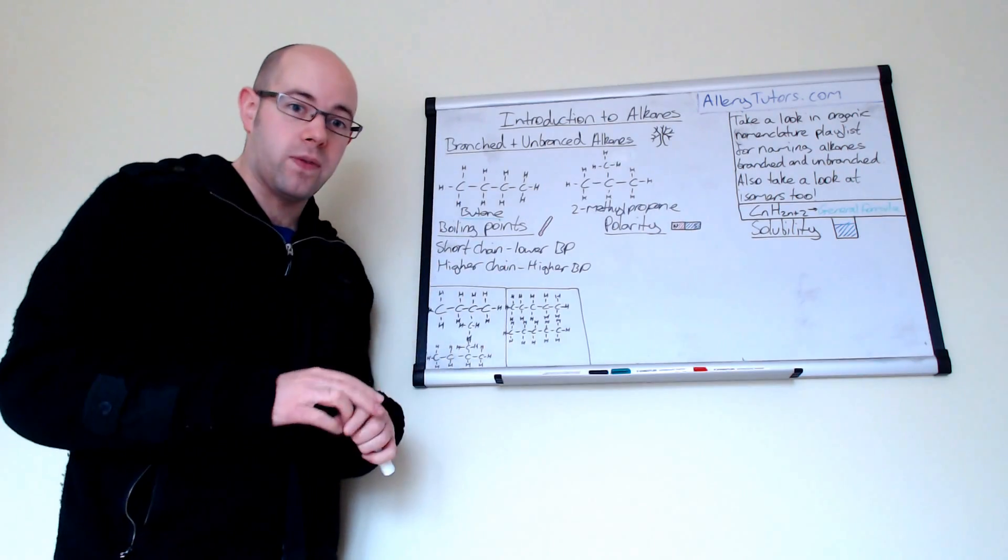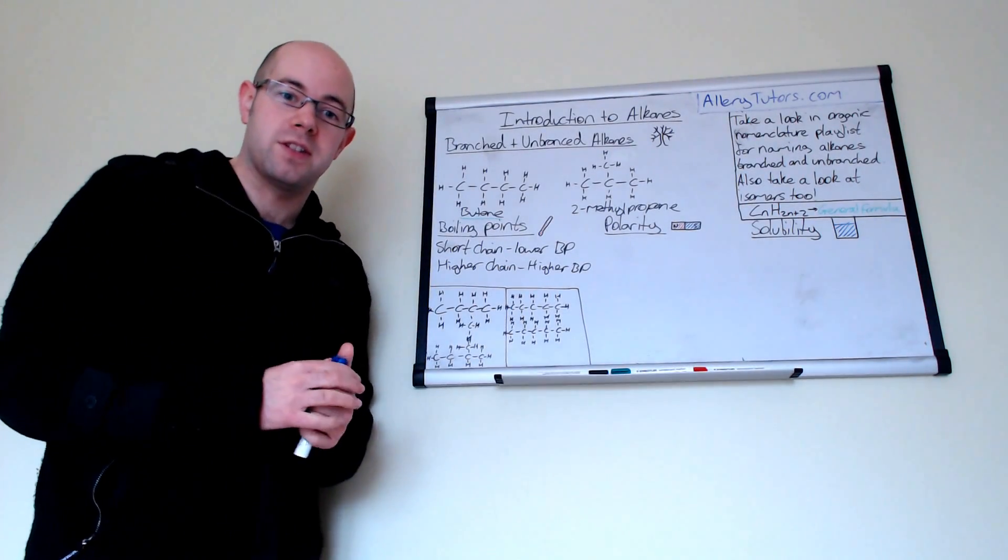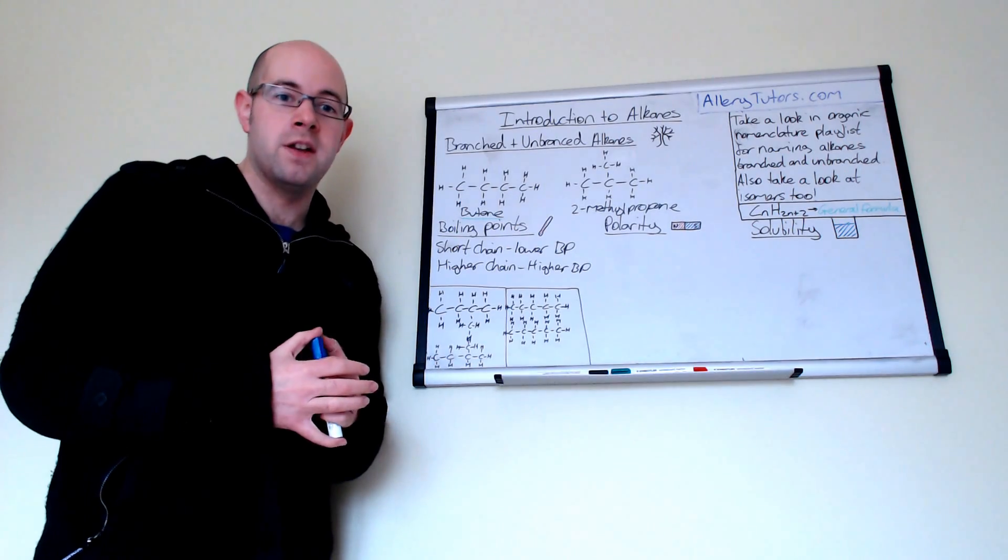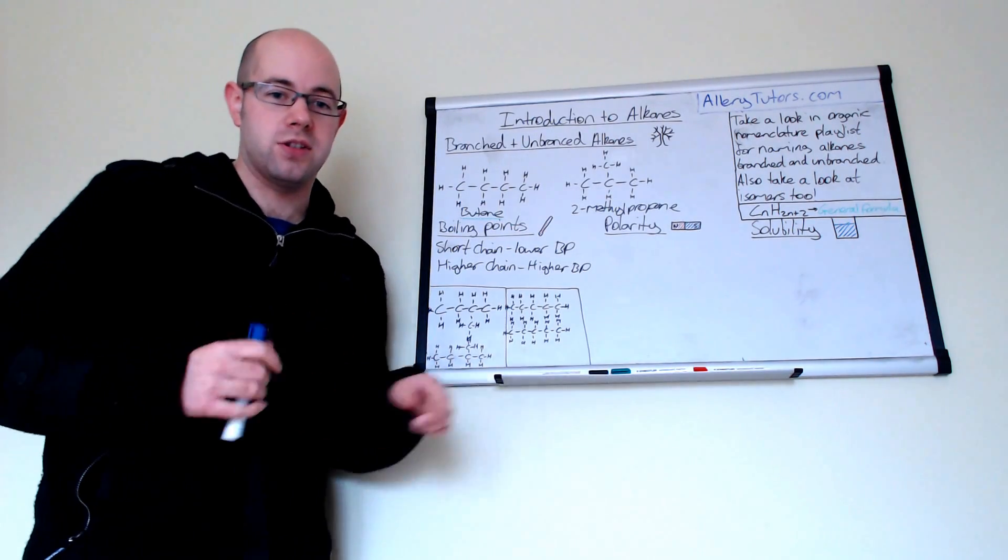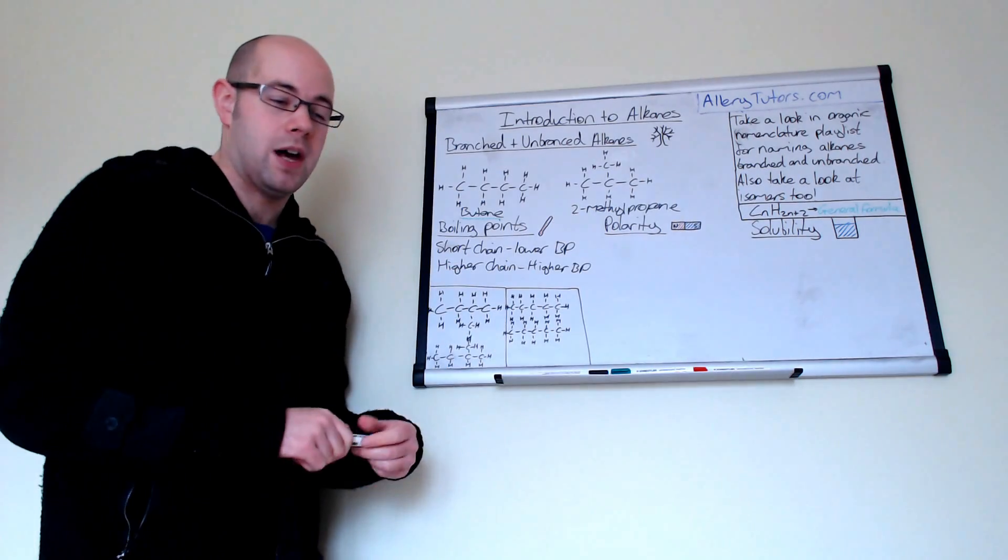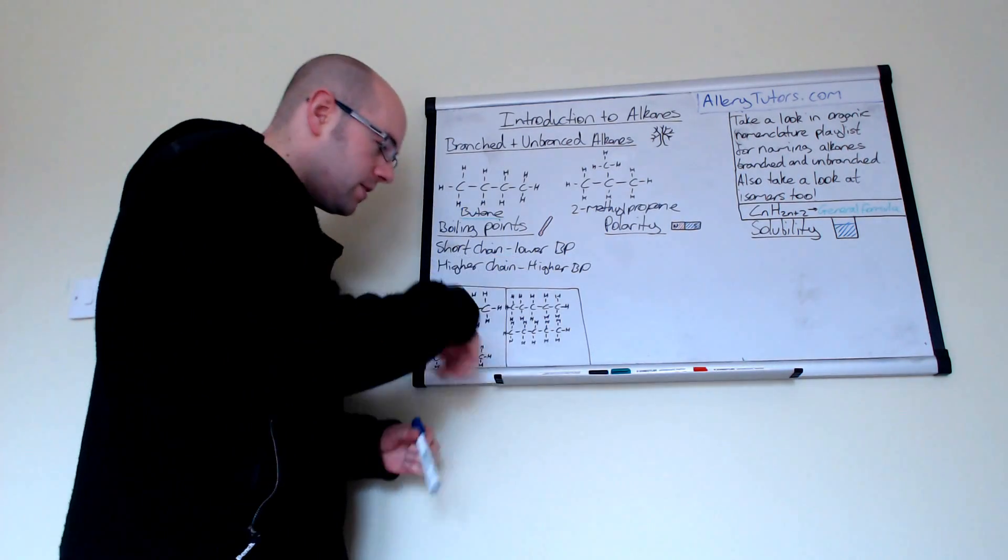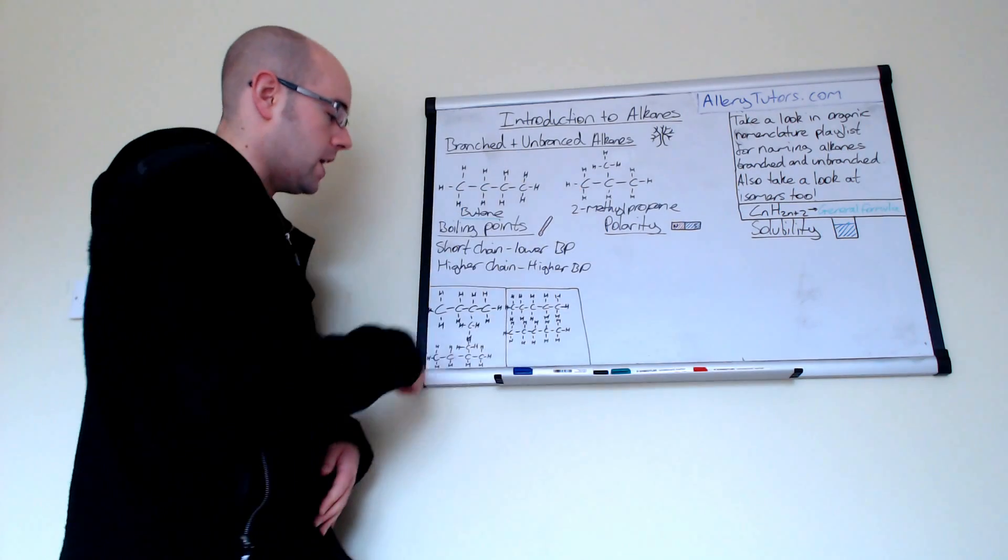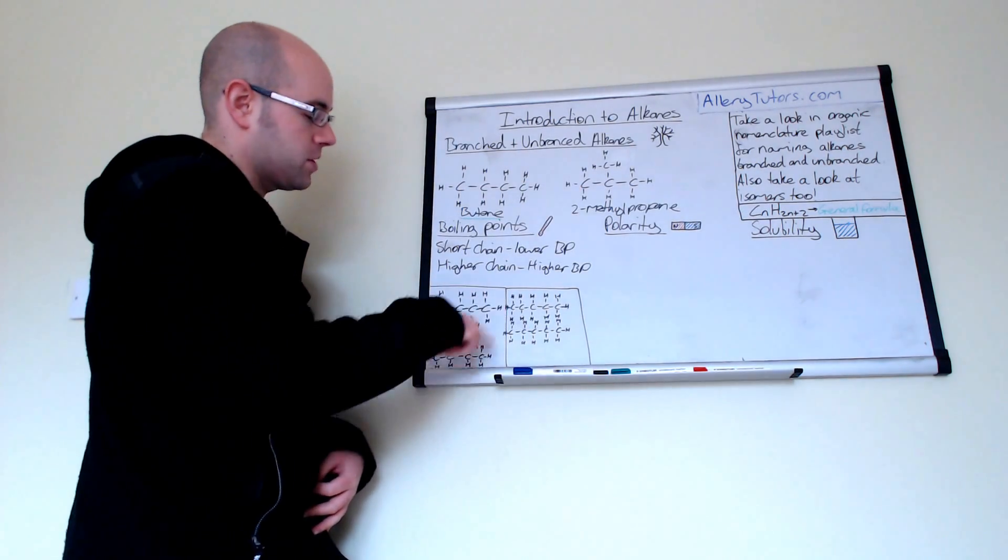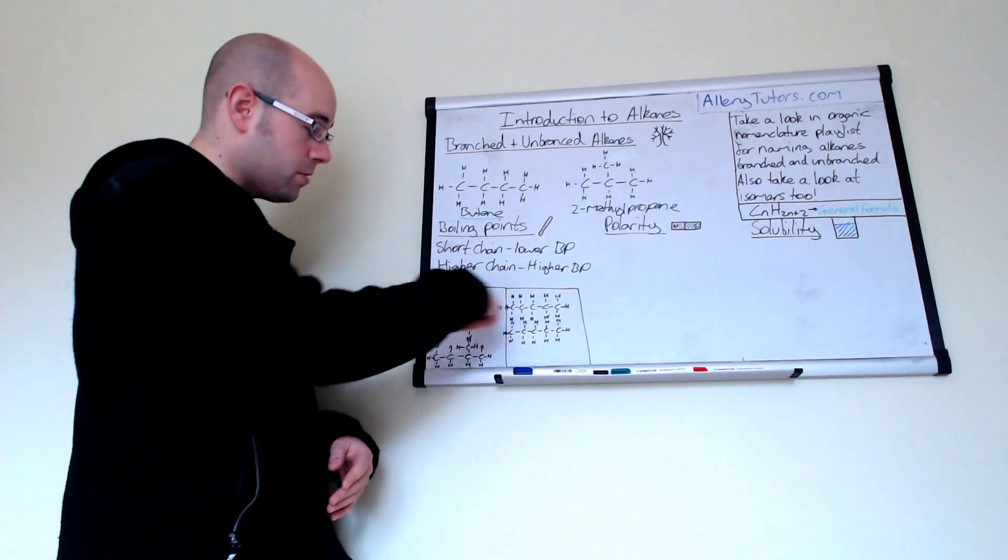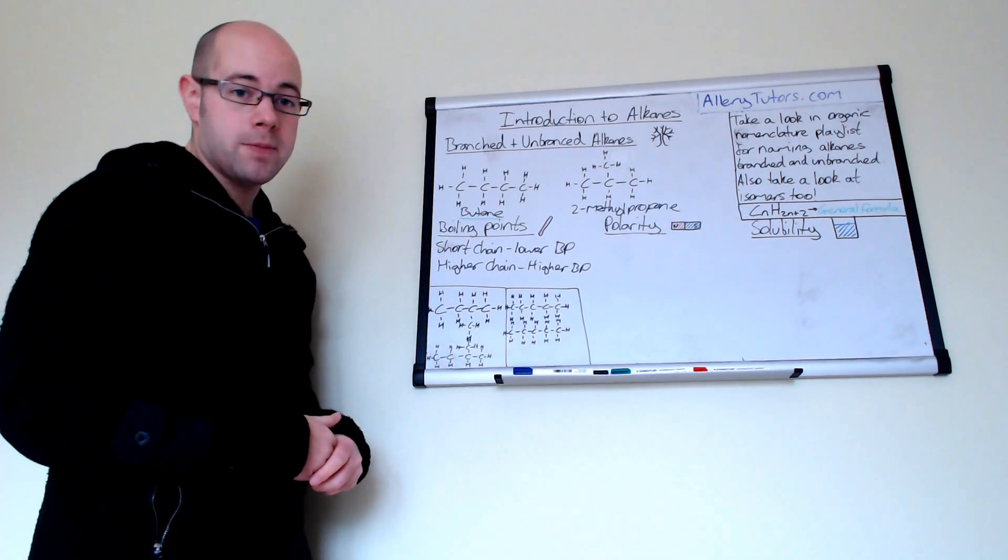Now, this is useful when we come on to fractional distillation, where you extract fractions from crude oil. And there is a video on fractional distillation. So if you just click on the link below, you can have a look at that and see where this is actually applied. And we have this setup here as well, where we have branching. Just coming back onto here, we have two molecules here which are branched, and we have two molecules here which are unbranched. And both of these have the same number of carbons and hydrogens.